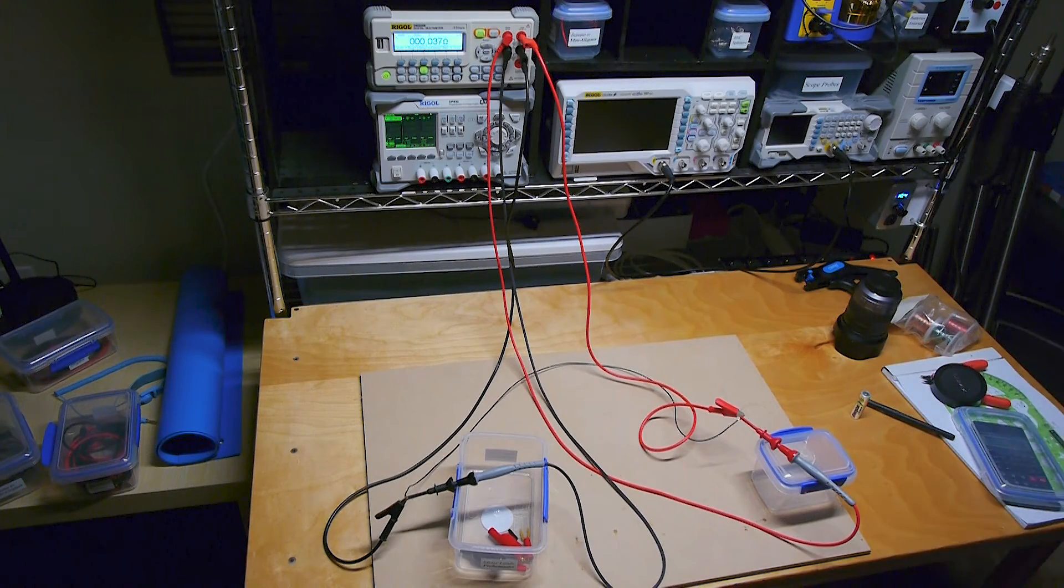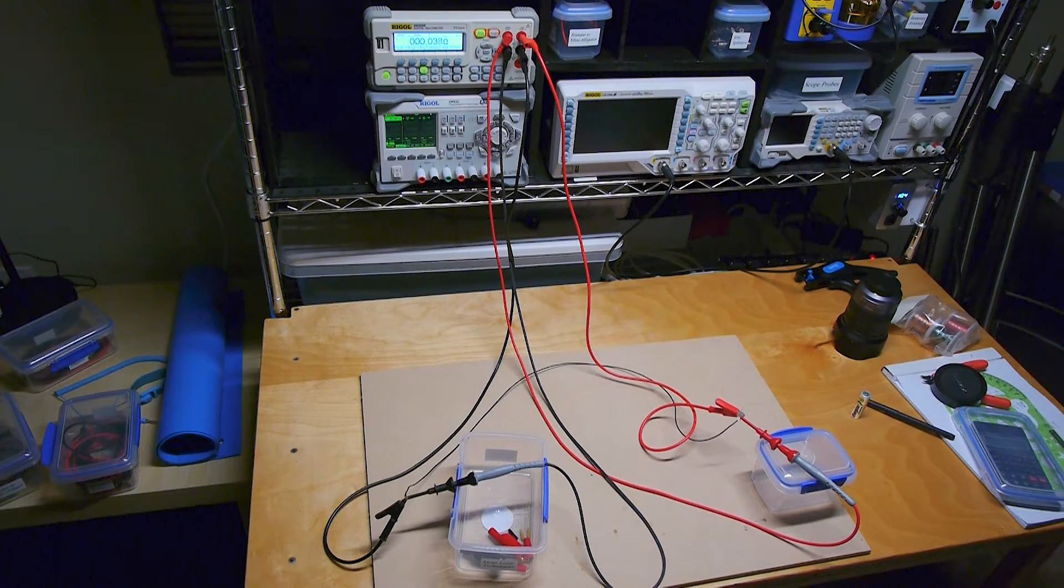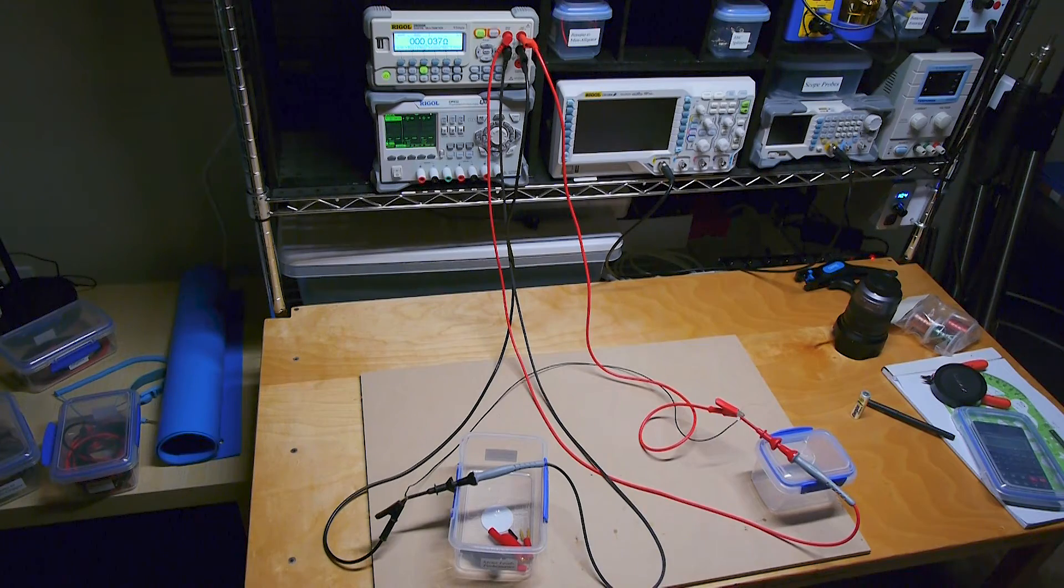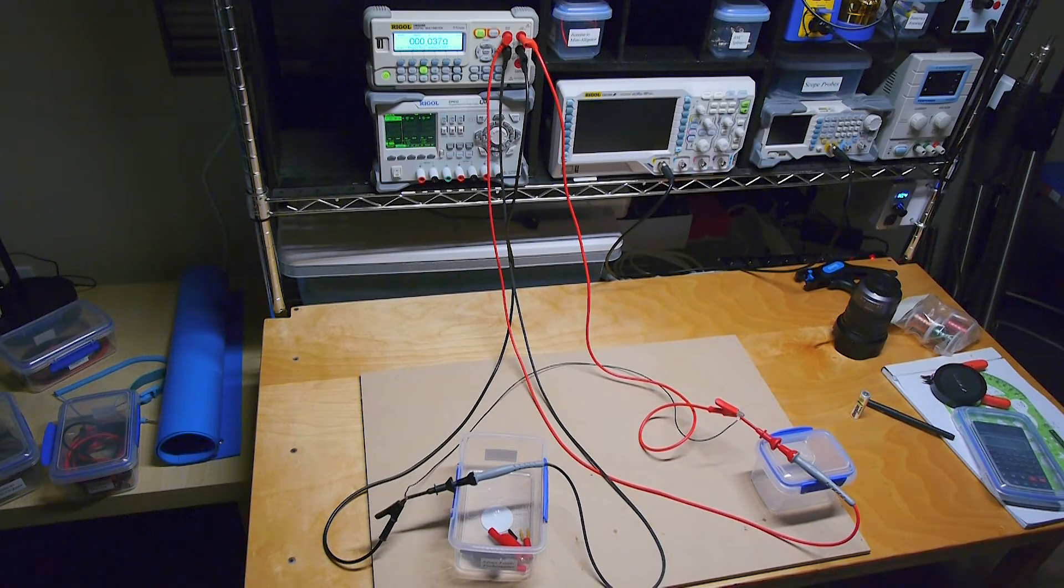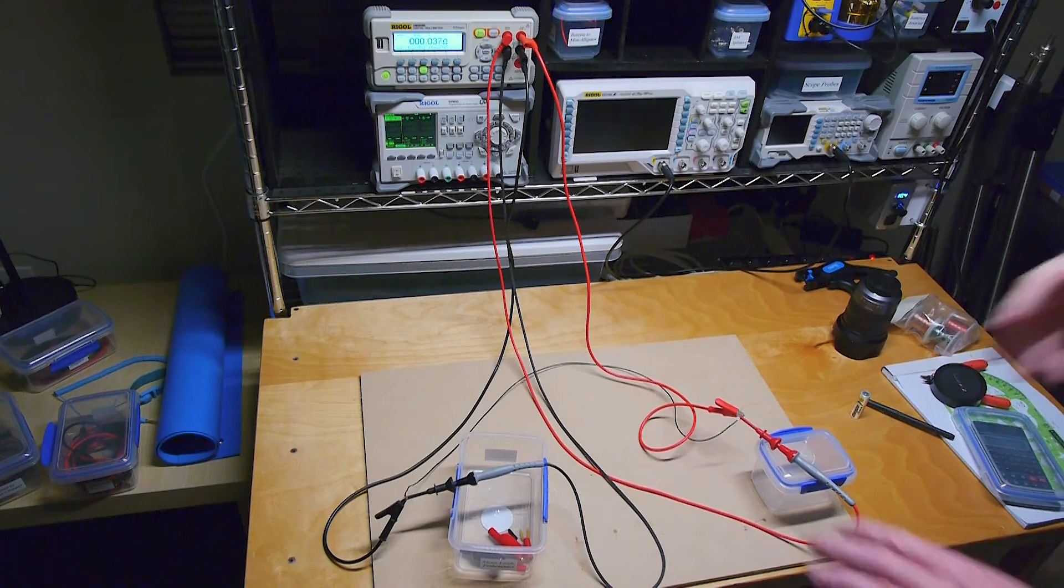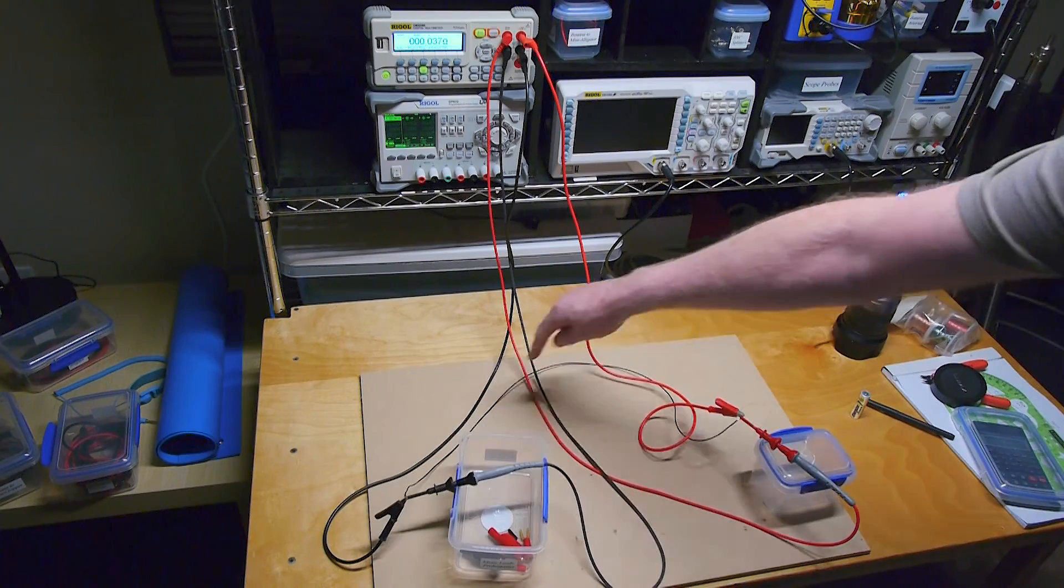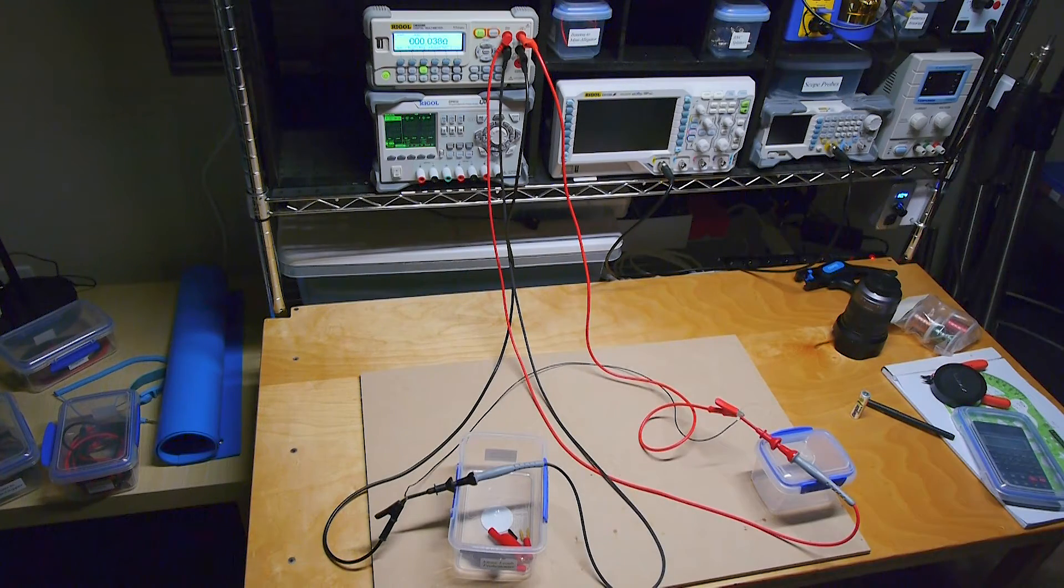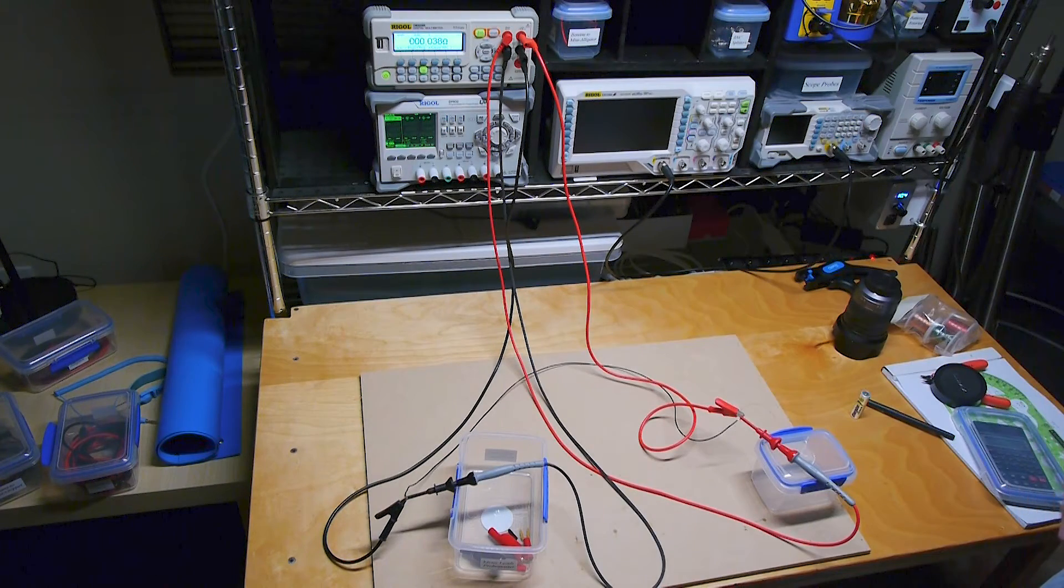Hi everybody, this is Brian and just a quick little video here about a very interesting thing I just discovered. I was playing around with my Rigel DM3058E bench multimeter in 4-wire resistance mode. And I noticed that with the leads connected the way they are, I'm using a small piece of wire about 750 millimeters long. And as you can see, in 4-wire mode it's showing 37, 38 milliohms.